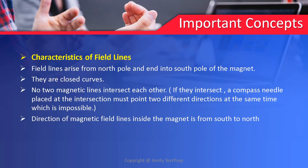Moving further, characteristics of magnetic field lines — simply field lines. The very first characteristic is that field lines arise from the north pole and end at the south pole of a magnet, meaning the magnetic field line starts from north pole and enters at south pole; they are closed curves. The third characteristic is no two magnetic field lines ever intersect each other, because if they intersect, a compass needle placed at the intersection must point in two different directions at the same time, which is practically impossible.